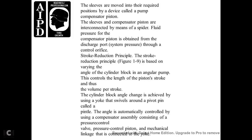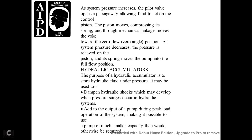Stroke Reduction Principle. In the stroke reduction principle, shown in figure 1-9, changing the angle of the cylinder block relative to the coupling shaft changes the length of the piston stroke and thus the volume per stroke. The angle change is achieved using a yoke that swivels around a pivot called the pintle. The angle is automatically controlled by a compensator assembly consisting of a pressure control valve and pressure control piston connected by mechanical linkage to the yoke. When system pressure increases, the pilot valve opens a passageway allowing fluid to act on the control piston. The piston moves, compressing a spring through mechanical linkage, moving the yoke toward the zero-flow or zero-angle position. When system pressure decreases, the spring moves the pump back to the full-flow position.